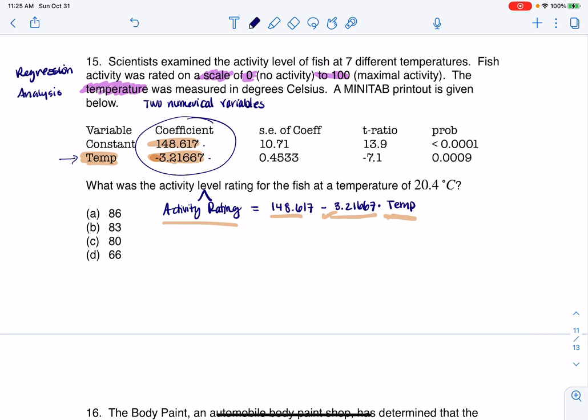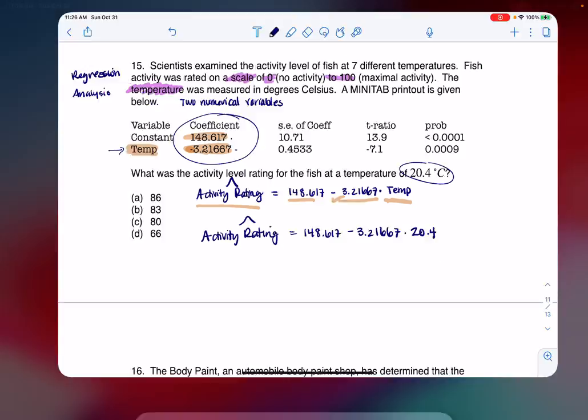So I've got all of that, but this is saying, 'Can you plug in 20.4?' So we've got activity rating—I can predict that with 148.617 minus 3.21667 times 20.4, and I'm going to see what that number is.